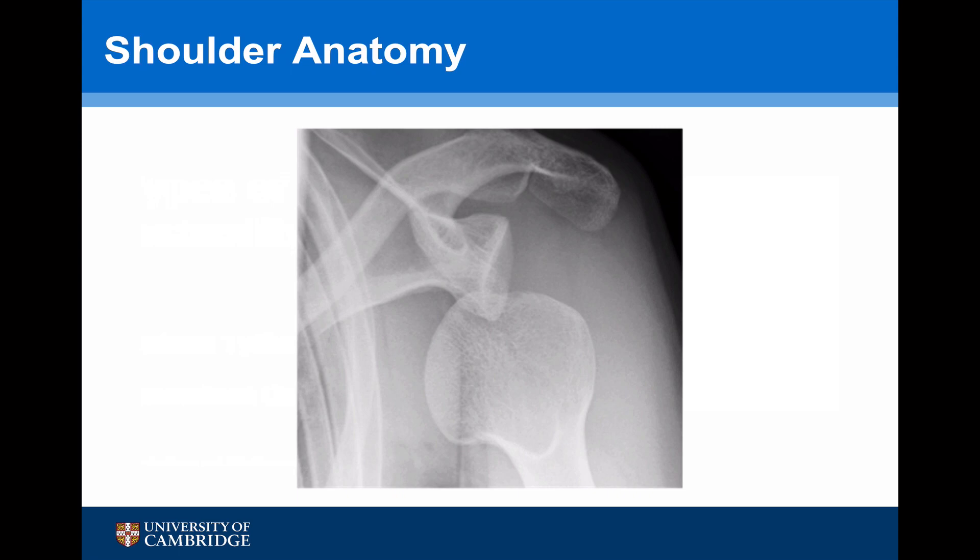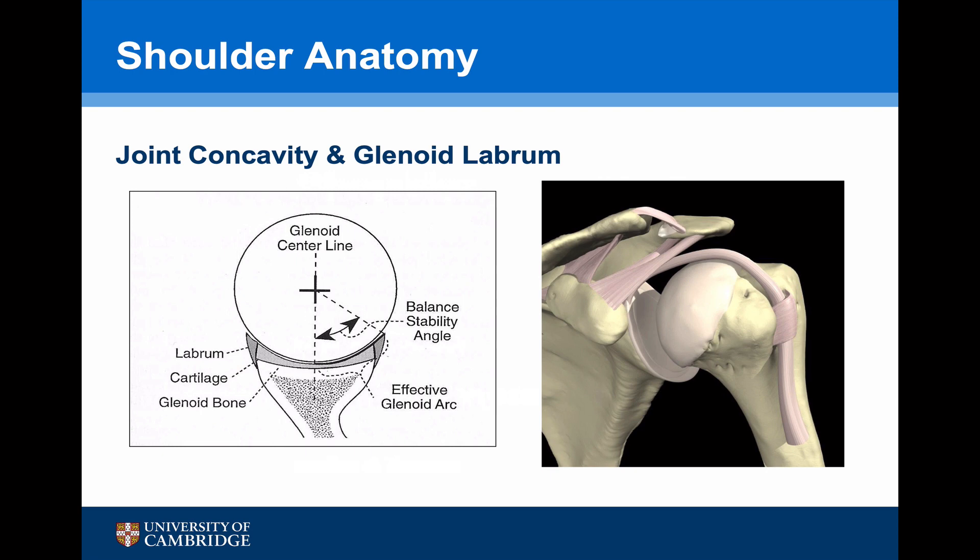However, dislocation of the glenohumeral joint is still relatively rare, and this is due to the complex arrangement of static and dynamic stabilizers that help to keep the glenohumeral joint stable. Although the glenoid is shallow, its concavity does supply some stability, and this effective glenoid arc is doubled by the surrounding glenoid labrum.